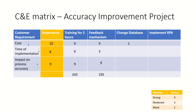Moving on to changing the database — it is not at all a cost-effective solution, so there is a weak relationship with cost and the rating scale is one. Time to implement changing the database will be more, so a weak relationship rating of one is given. It will create a huge impact on process accuracy, so the score is nine. The overall score is 10 + 8 + 81 = 99.